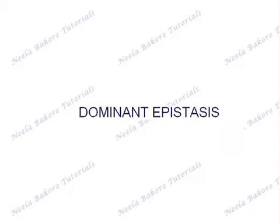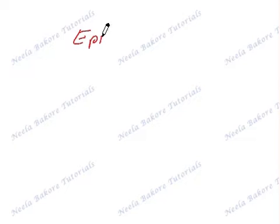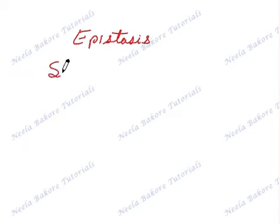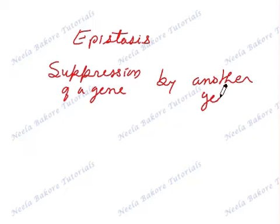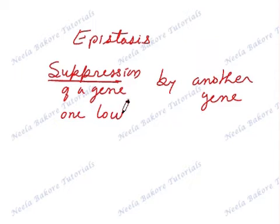In this section I am going to explain the concept of dominant epistasis. Epistasis means suppression of a gene by another gene. The gene which is getting suppressed is at one locus, and the gene which is suppressing it is at another locus.